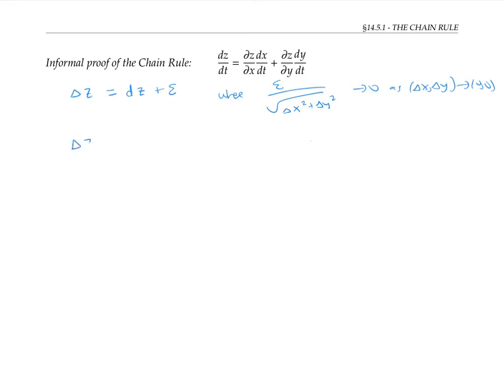I can rewrite this by expanding out the differential, that's f sub x delta x plus f sub y delta y. Now I'll divide all my terms by delta t. And from calculus one, I can write dz/dt is the limit as delta t goes to zero of delta z over delta t. So that's the limit of the expression above.